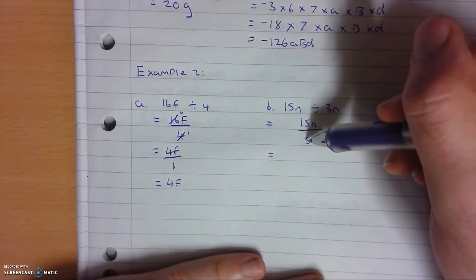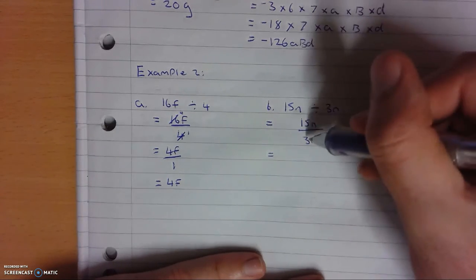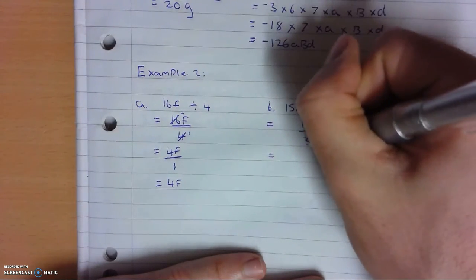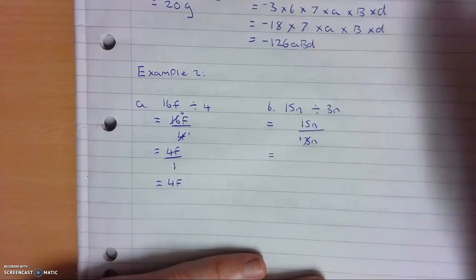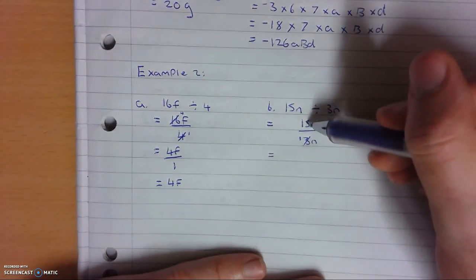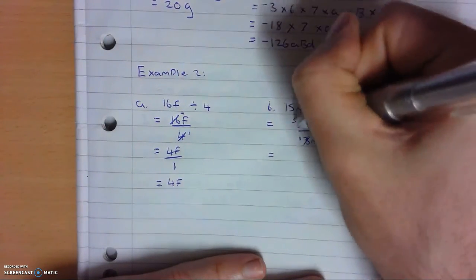So how many times does 3 go into 3? 3 go into 3 once. How many times does 3 go into 15? 3 will go into 15 five times.